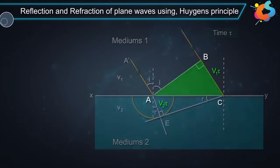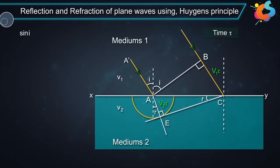From triangle ABC, sin I is equal to BC by AC which is equal to V1 tau divided by AC.